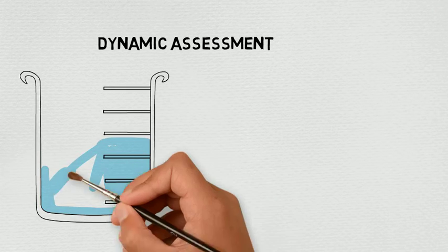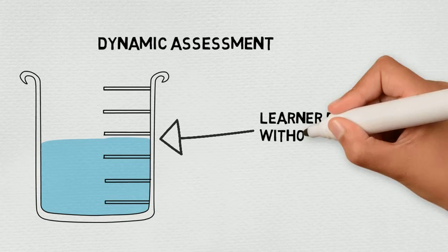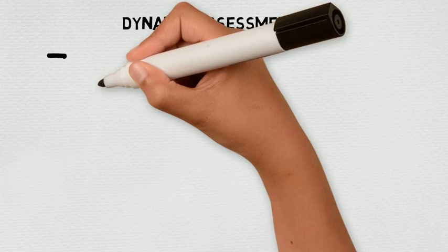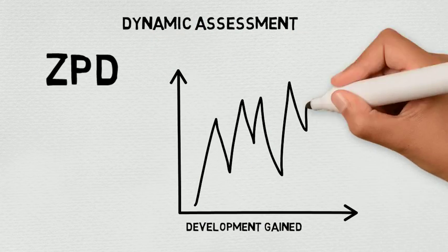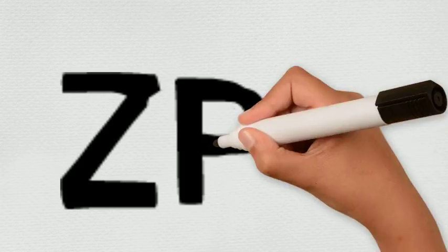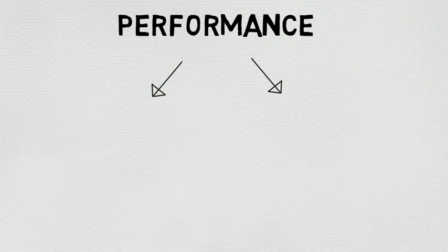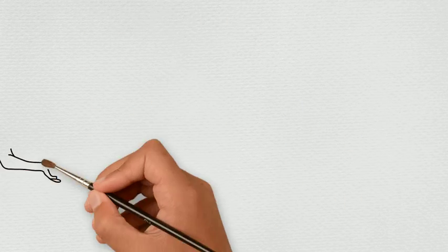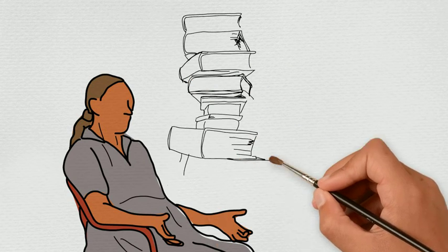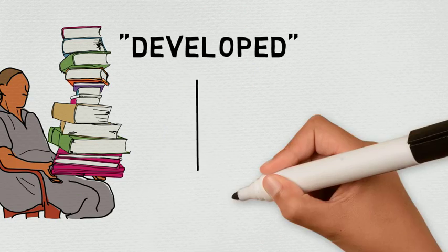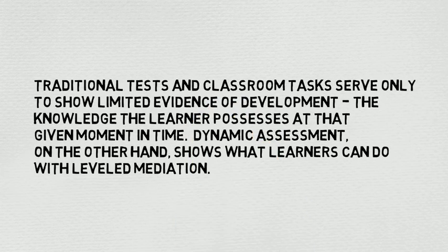One area of interest to researchers is the idea of assisted performance. Traditional tests measure learners' attained development but provide no information about what they could achieve with mediation. If we begin to think in terms of ZPD with assessment, teachers can see both development gained and development potential. To think of ZPD is to think of development, which can occur over a period of short or long time. It is not just about performance though. Lantoff points out that it is about where performance resides, with the learner or with someone else. When learners take on more responsibility for their performance or what they can do by themselves right now, they are said to have developed even if their performance hasn't changed a great deal. Because of this, traditional tests and classroom tasks serve only to show limited evidence of development, the knowledge the learner possesses at the given moment in time. Dynamic assessment, on the other hand, shows what learners can do with leveled mediation.